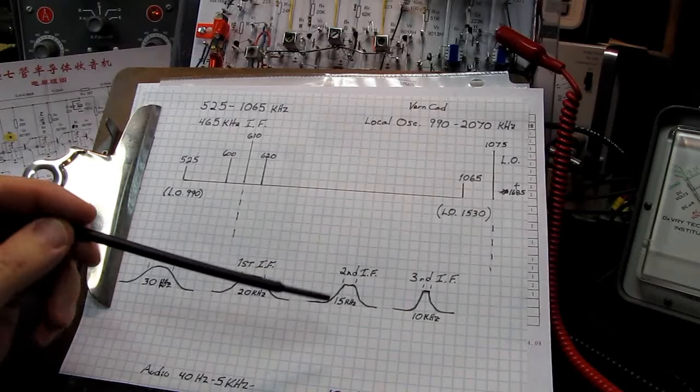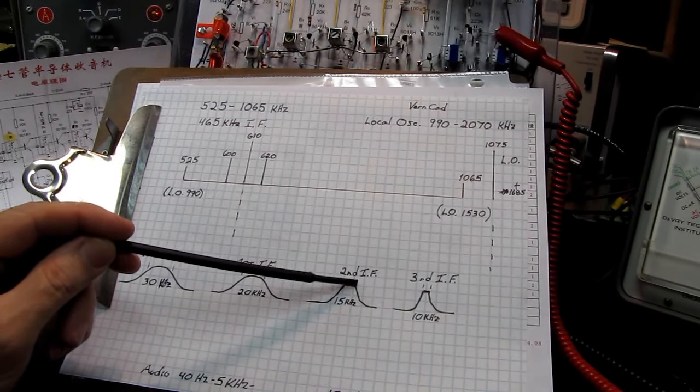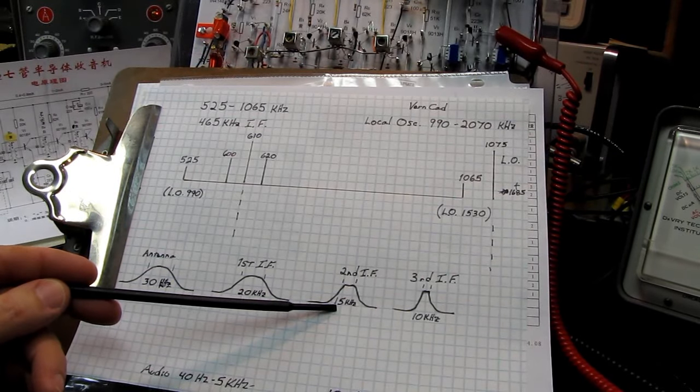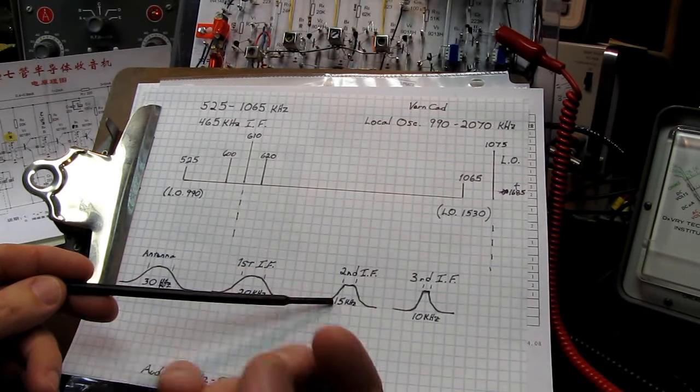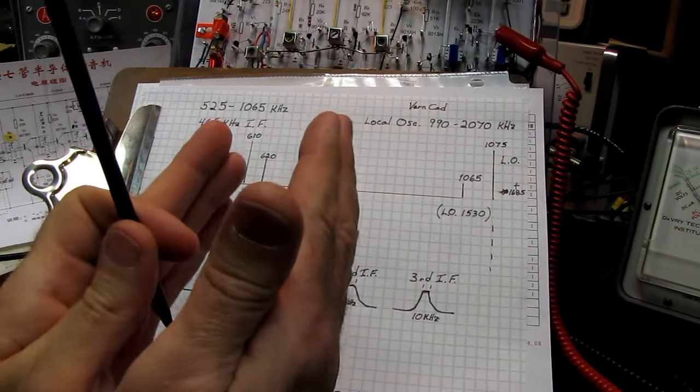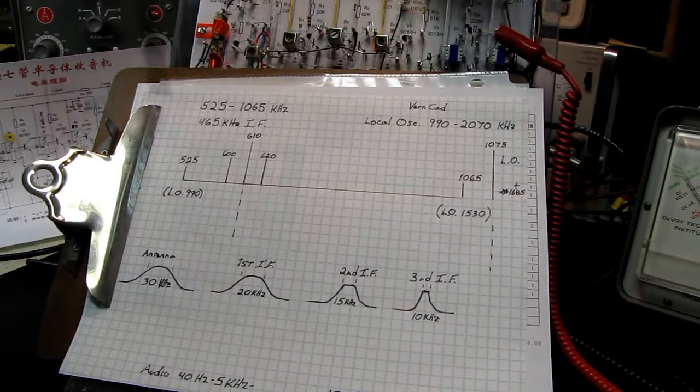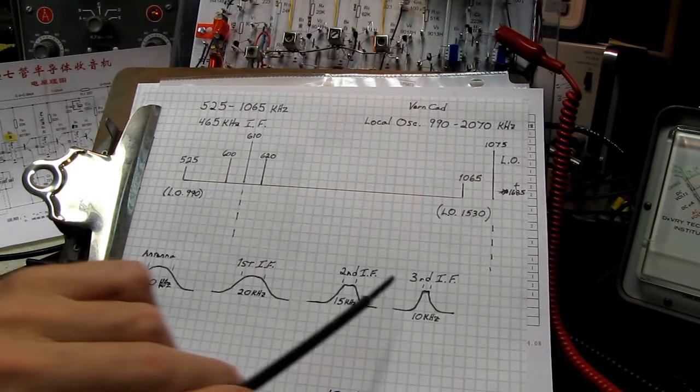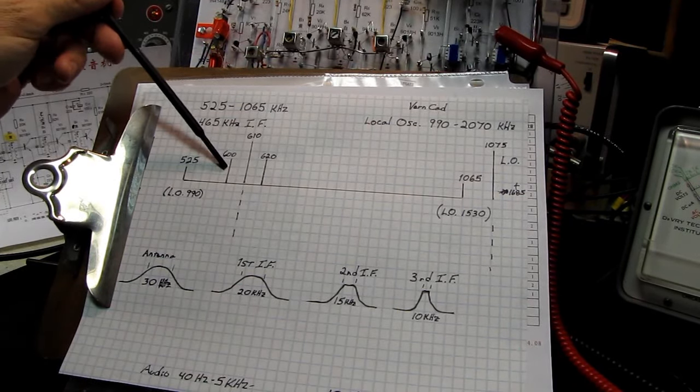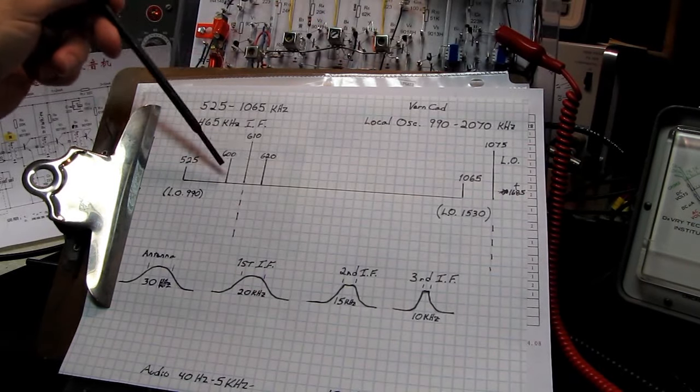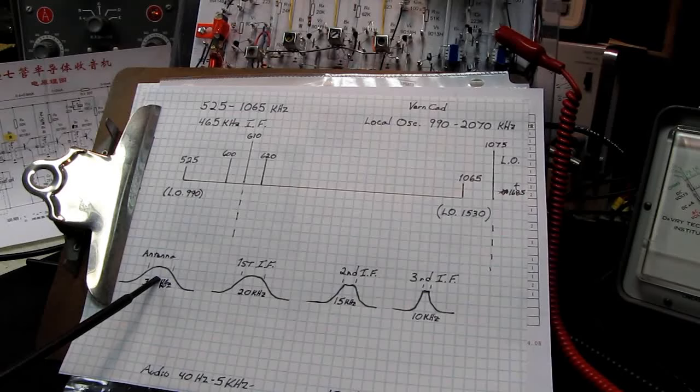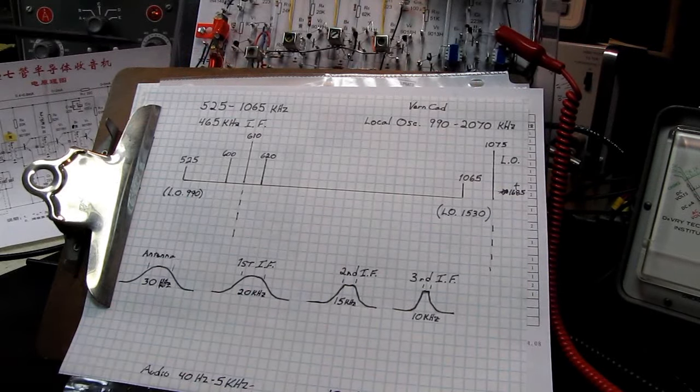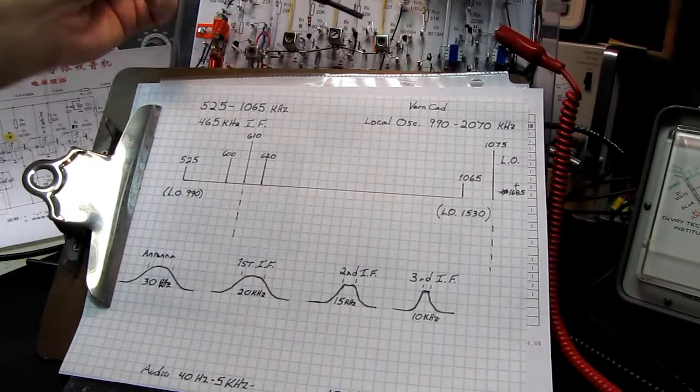We go into a second IF filter. That helps to make the skirts, or the edges of the filter, a little bit steeper, probably bringing it down to about 15 kilohertz. Now we're starting to get some selectivity out of our radio. We're narrowing down the amount of signal that can be heard, or the amount of bandwidth that can be received, and it starts rejecting adjacent channels. Remember, these up here are very close. Even though they might be far away, they would be able to bleed in here.